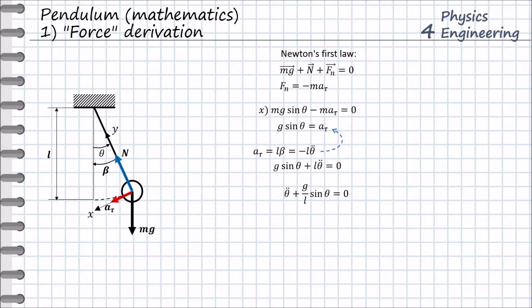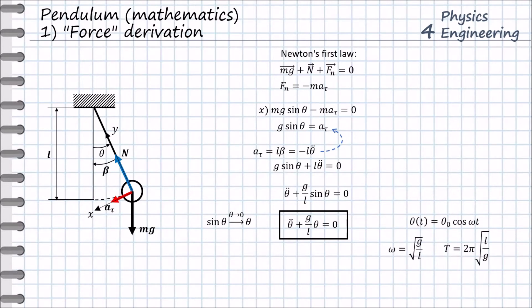Going back to our task, we obtain the equation describing the dynamic motion of the pendulum. This differential equation includes the harmonic function sine, so there is no solution in elementary mathematical functions. We apply the small-oscillation approximation, assuming the amplitude is very small, close to zero. This gives us a simplified equation whose solution is the angular position as a harmonic cosine function, with the corresponding oscillation frequency and period. Notably, neither the frequency nor the period depends on the mass of the pendulum.